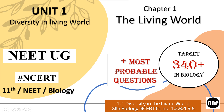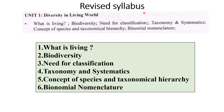There will be four different options from four different chapters, so the particular statements come from each chapter. Today's topic is based on the revised syllabus for NEET 2024. The topics are: What is Living, Biodiversity, Need for Classification, Taxonomic and Systematic Concepts of Species, Taxonomical Hierarchy, and Binomial Nomenclature.